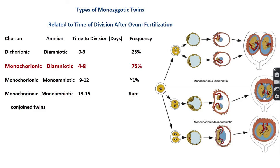In monochorionic monoamniotic twin pregnancy, a single blastocyst is formed and the two inner cell masses are close enough that they produce a single amnion and single yolk sac. In conjoined twins, two inner cell masses are formed but are only partially separated, resulting in partial fusion of the fetuses, always with a single amnion and single yolk sac.